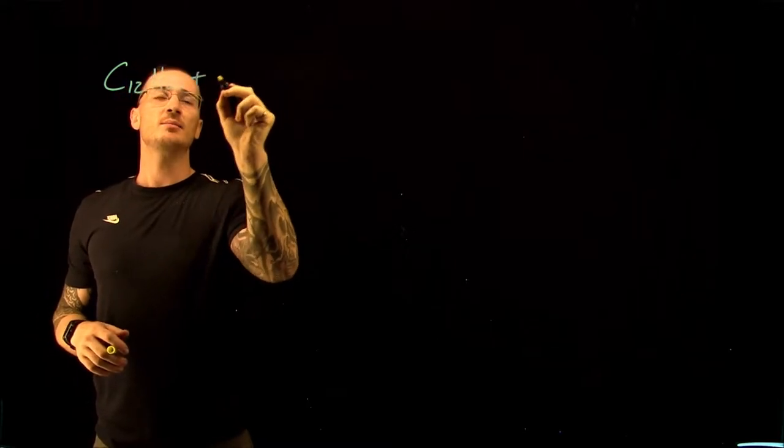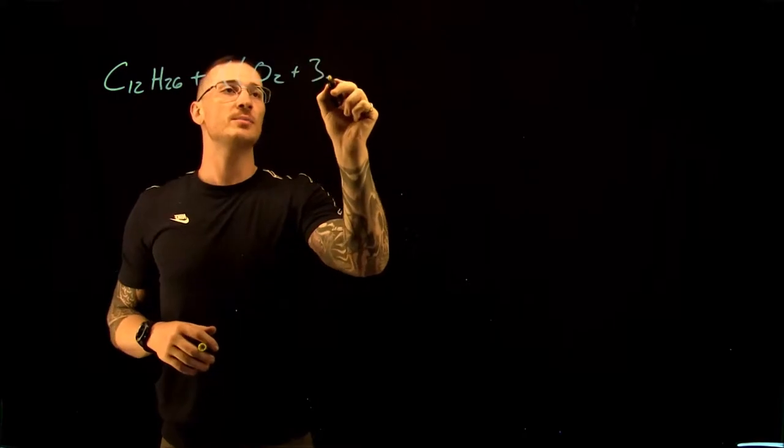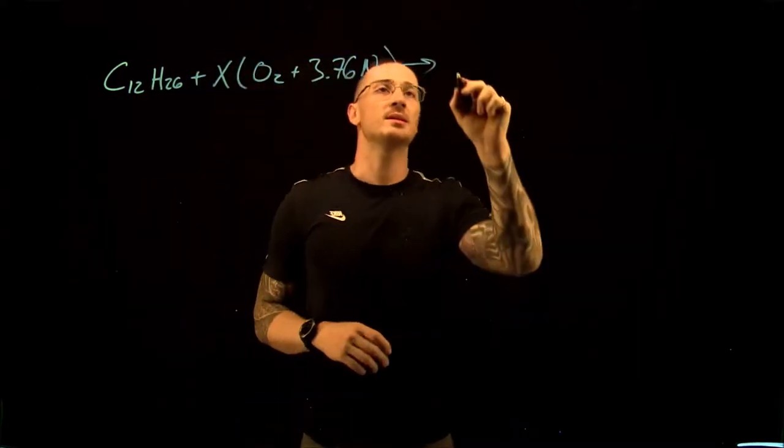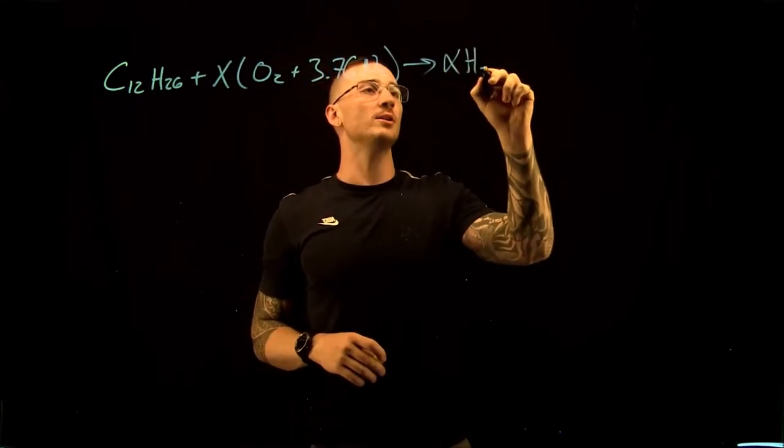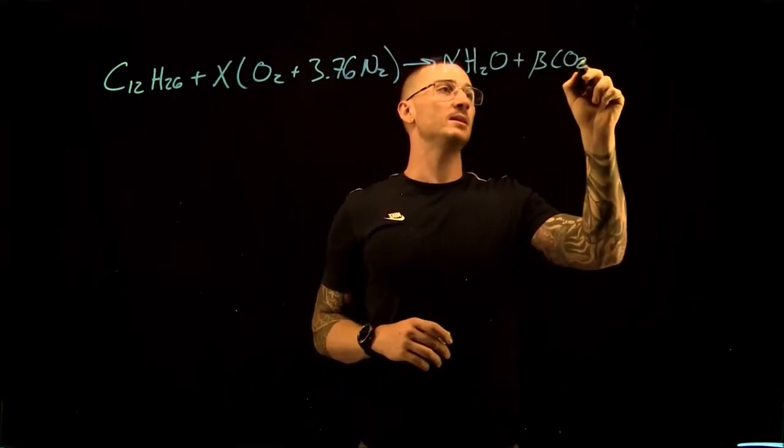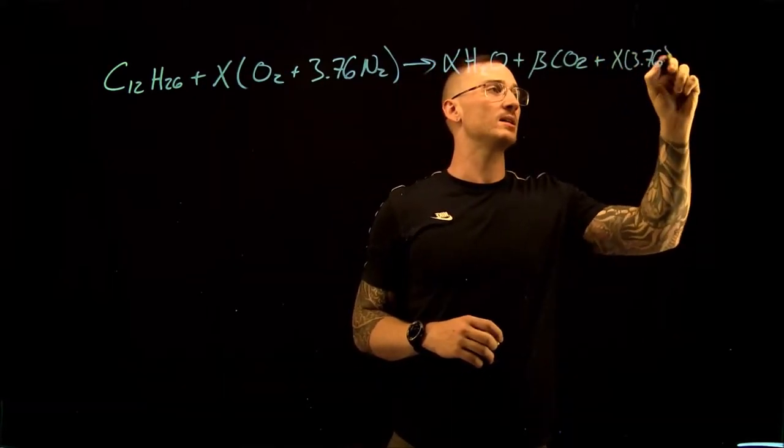We're now going to look at our stoichiometric equation. We're told we're burning a fuel that's C12H26 plus some X amount of air, so O2 plus 3.76 N2. This becomes some alpha amount of water plus some beta amount of carbon dioxide plus X times 3.76 nitrogen.